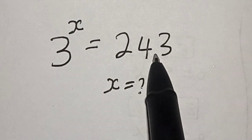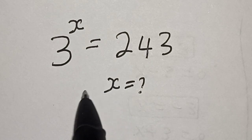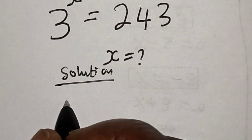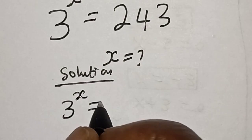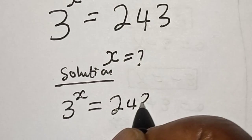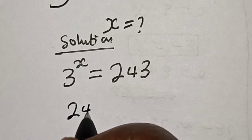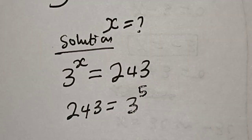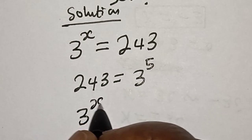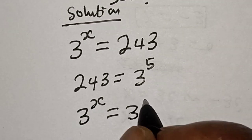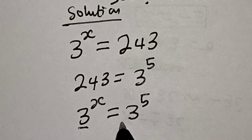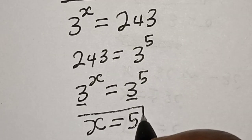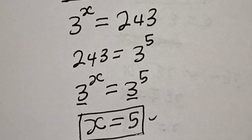3 to the power of X is equal to 243 — what is the value of X? Solution: 243 is equal to 3 to the power of 5. Substituting, we have 3 to the power of X is equal to 3 to the power of 5. Since we have the same base, X is equal to 5. That is our final answer.